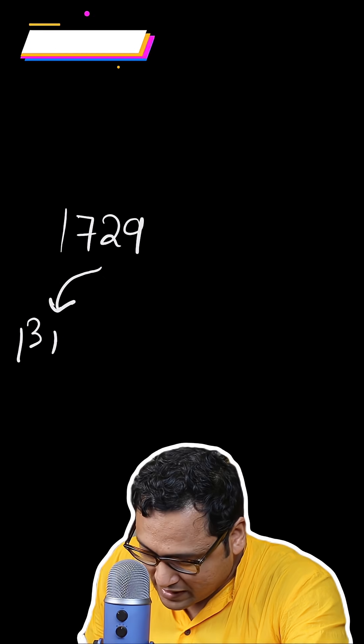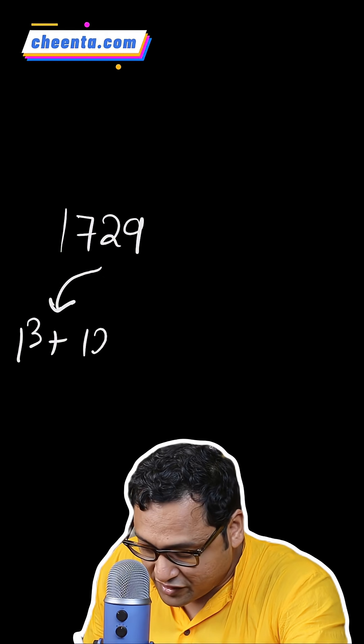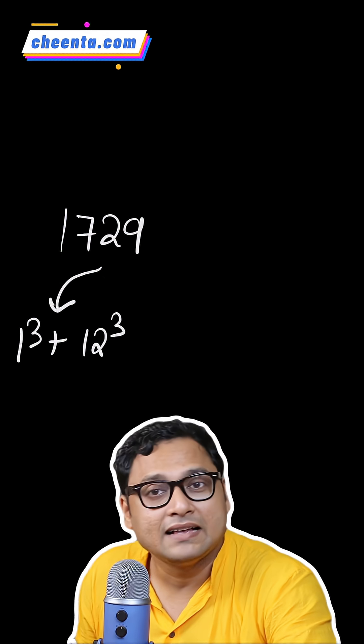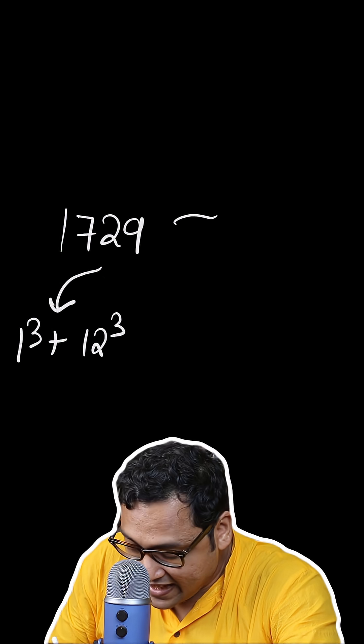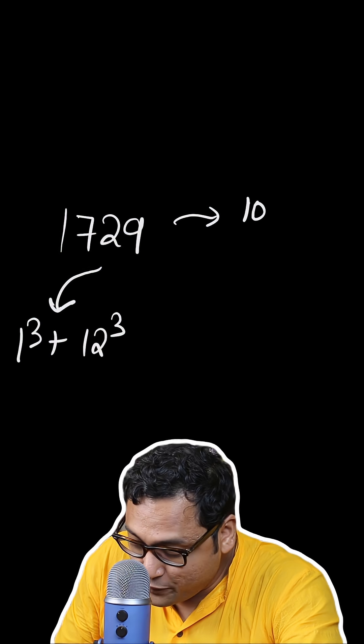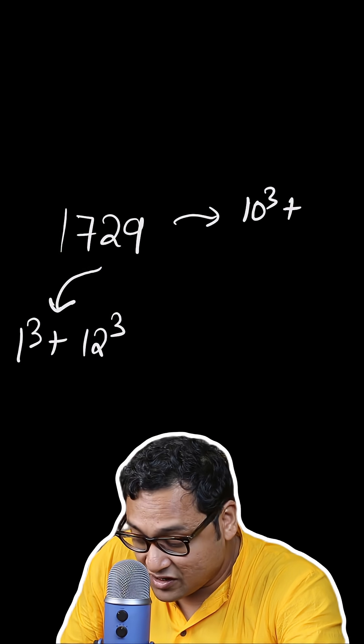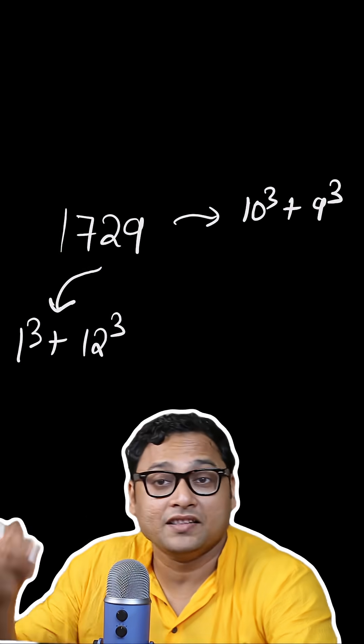It can be written as a sum of two cubes in two different ways: 1 cube plus 12 cube — that's one way — and 10 cube plus 9 cube — that's the other way.